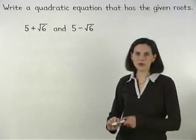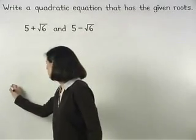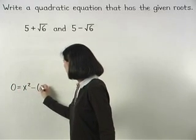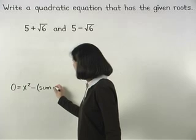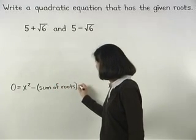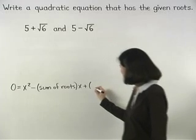So let's use our formula: 0 equals x squared minus the sum of the roots times x plus the product of the roots.